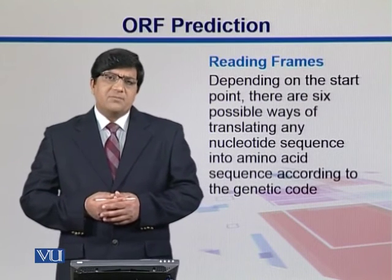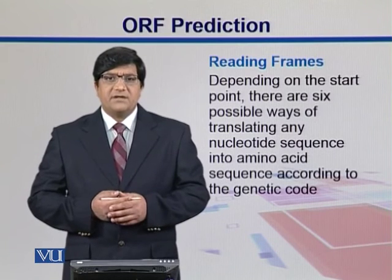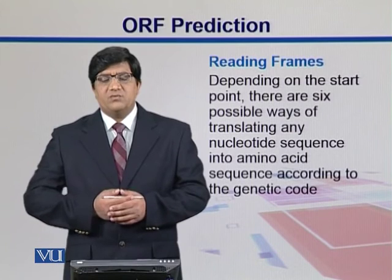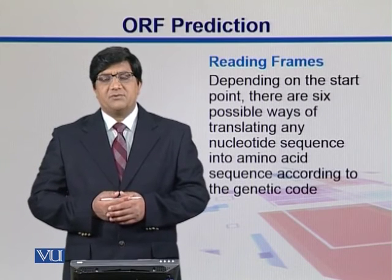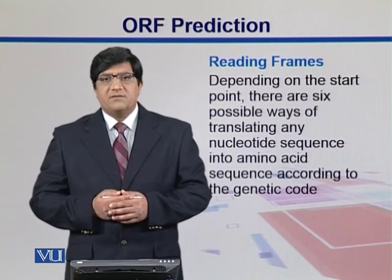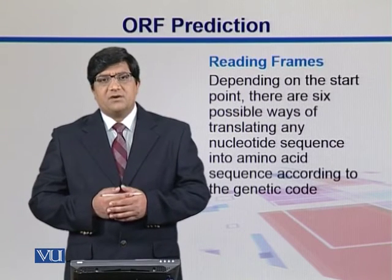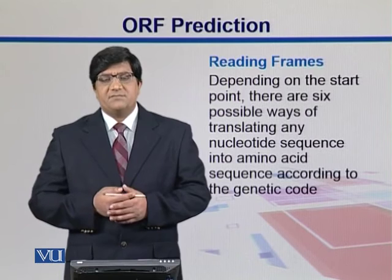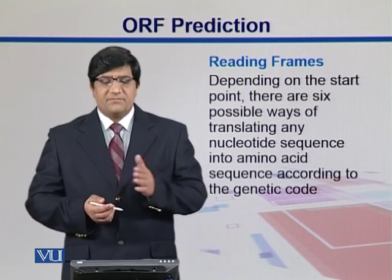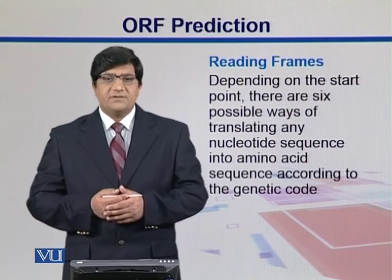Depending upon different start positions, we can define different ORFs. If we want to go for those triplet codons, we can start with any nucleotide. In this way, we have three different possibilities for one strand. And since we have two strands in DNA, in total we can have six different reading frames, or reading registers.